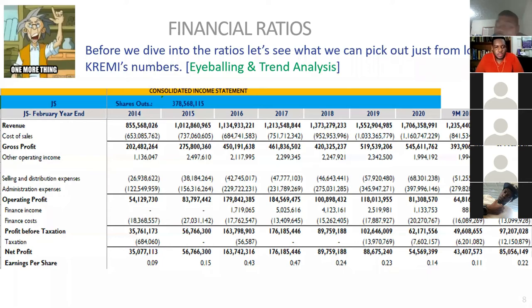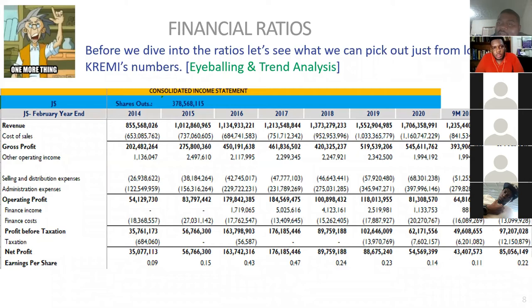Revenue is down in nine months 2019. Creamy has a February year-end, so when you see 2020 here, it's actually February 2020. We should compare nine months 2020 to nine months 2019 — those are the fair columns to compare. For nine months 2020, sales is up. Also, 2014, 15, 16, 17, 18, 19, and 20 are all 12-month periods, while nine months 2019 is only nine months, so comparing those columns directly would be unfair.